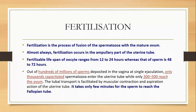Fertilization is a process that occurs in the ampullary part of the uterine tube. The uterine tube has got various parts; the widest part is the ampullary part where fertilization takes place. The fertilizable lifespan of the oocyte ranges from 12 to 24 hours, whereas the lifespan of the sperm is higher — about 48 to 72 hours, that is almost three days.